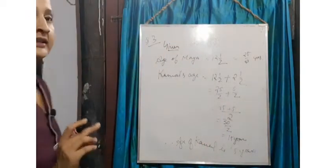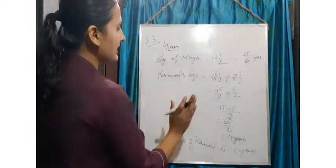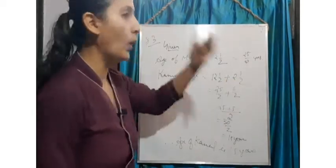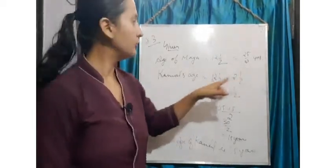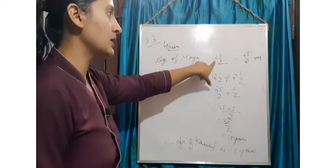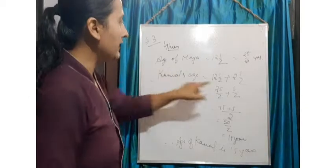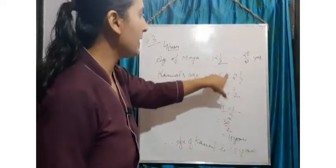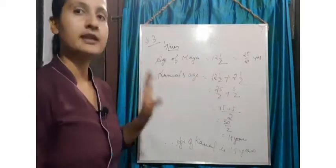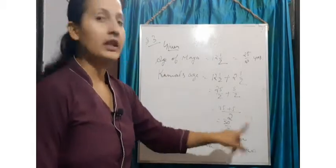Am I clear? The age of Kamal is fifteen years. Kamal was two and a half years older than Maya and Maya's age was twelve and a half years. So we have to add two and a half years to Maya's age to get Kamal's age. So Kamal's age is fifteen years.